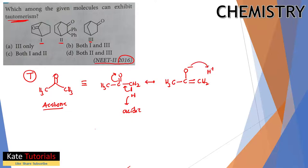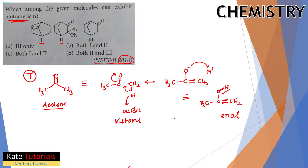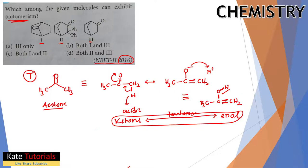When that H+ is removed, the enolate forms and the H+ can bond to the oxygen. So the molecule can be written as CH3-C(OH)=CH2. Initially it was a ketone, but now it has a double bond and an alcohol (OH) group - this is keto-enol tautomerism. This is shown only by ketones, aldehydes, and molecules that have an alpha hydrogen.